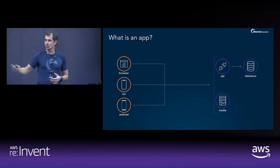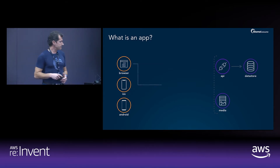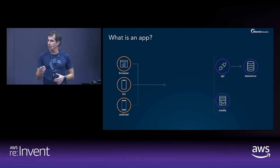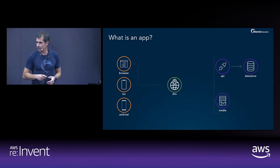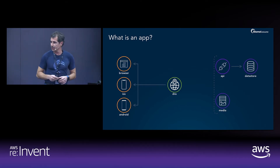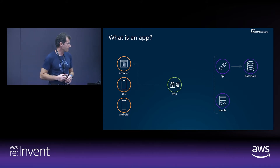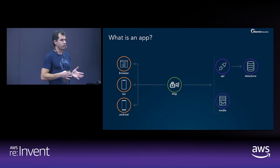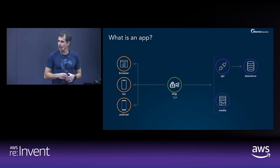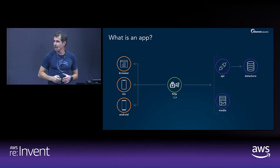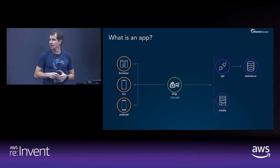Most modern architectures have an API that gets content from a data store, and static assets like images are usually delivered from an object store. The communication between the client and the server usually starts with a DNS resolution, and once you resolve the name and connect to an IP, that happens over TCP or UDP, which is the transport protocol. Once the connection is established, we switch to HTTP, which is the application layer protocol where all the information goes back and forth. Normally that communication is HTTP over TCP, and for the new protocol HTTP 3, it will go over UDP.